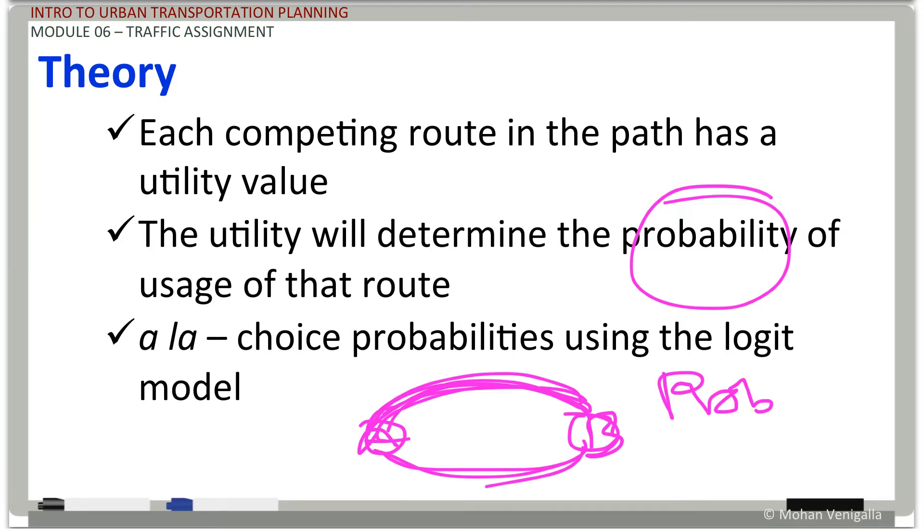If you have travel time associated with each path, of course every path will, so that travel time could determine the utility of that path. So if you know the utility theory, we talked about logit models in mode choice. If you extend the same logic, travel time as a utility or disutility, depending on which way you want to put it, and logit model formulation could give you a solution for traffic assignment problem, and that's what we are studying.